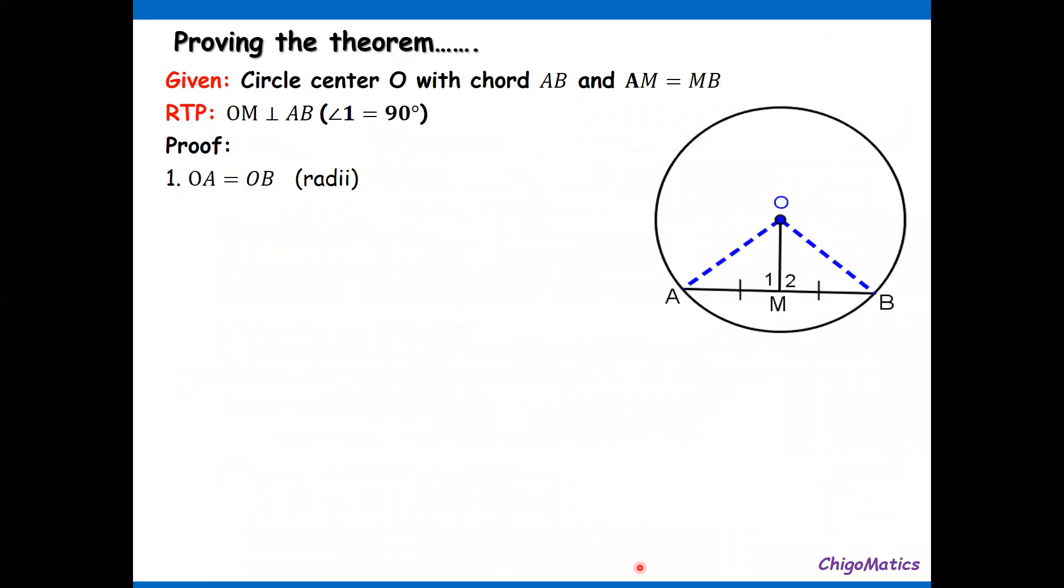Let us do the demonstration. OB equals OA because they are both radii. We realize that OM equals OM, common side or reflexive property. Then AM equals MB, that is given information. So at the end we have all three sides equal. We conclude that triangle OAM is congruent to triangle OBM by side-side-side criteria.